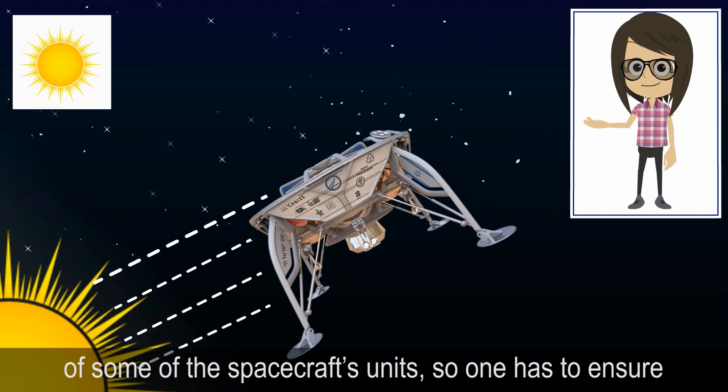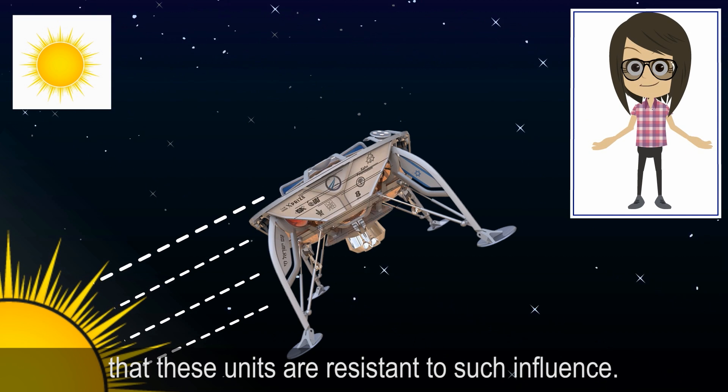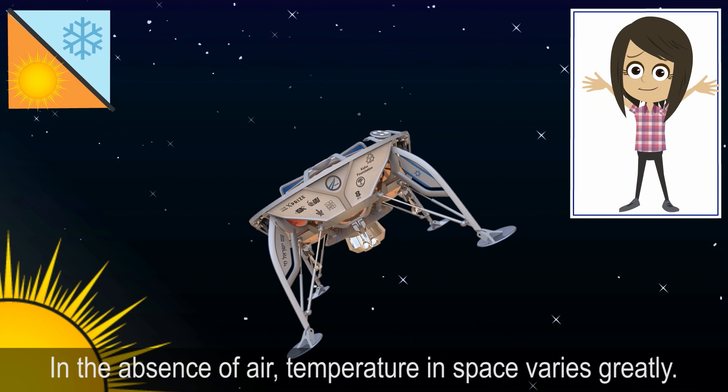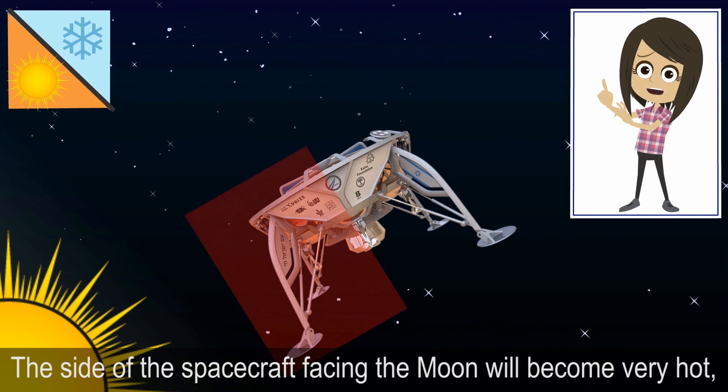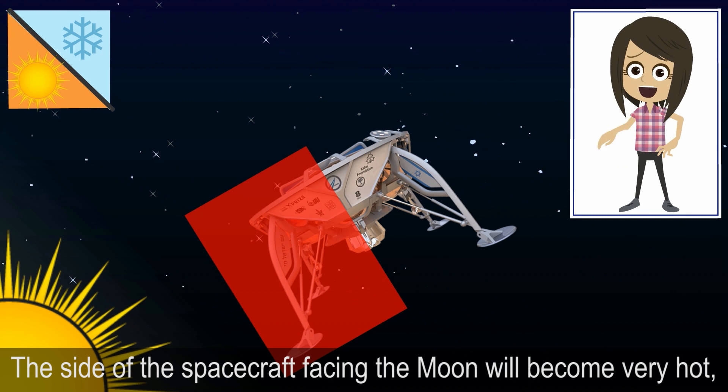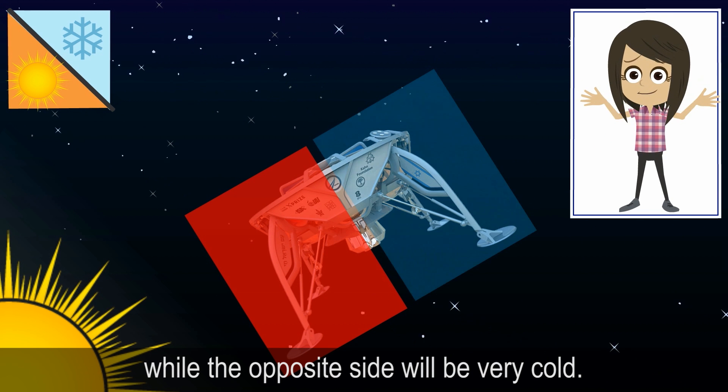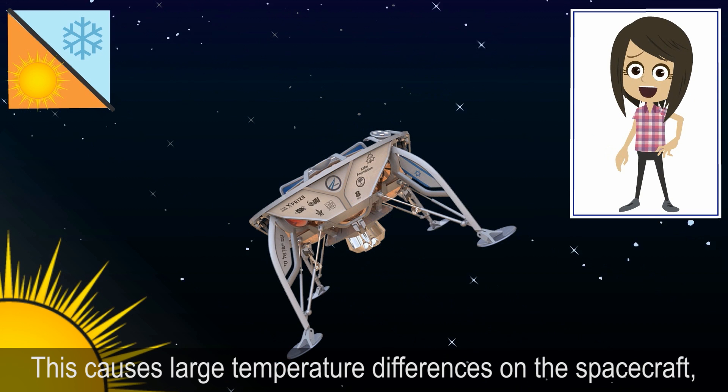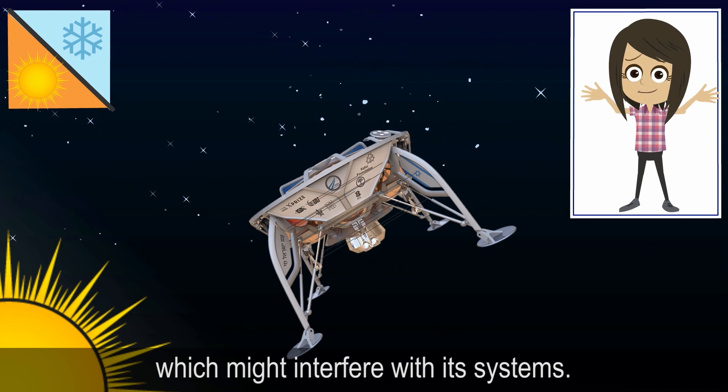In the absence of air, temperature in space varies greatly. The side of the spacecraft facing the moon will become very hot, while the opposite side will be very cold. This causes large temperature differences on the spacecraft, which might interfere with its systems.